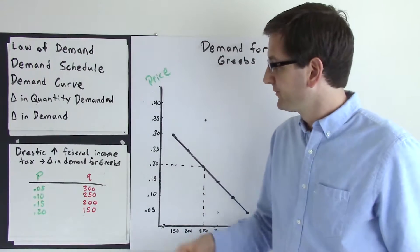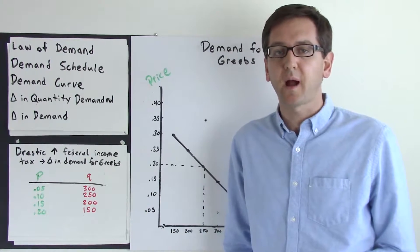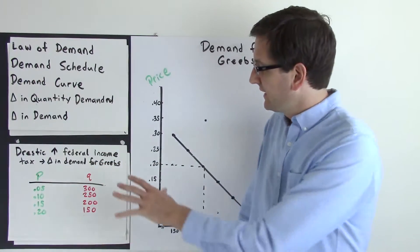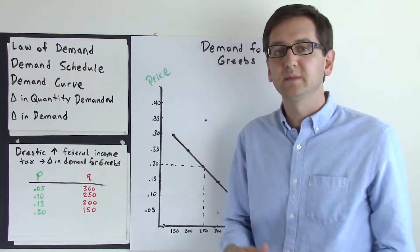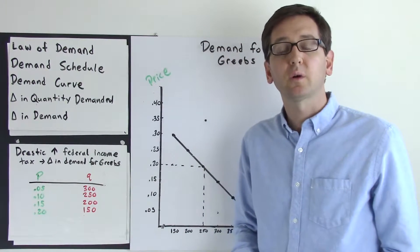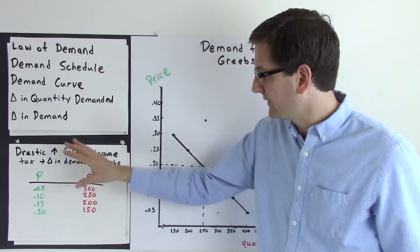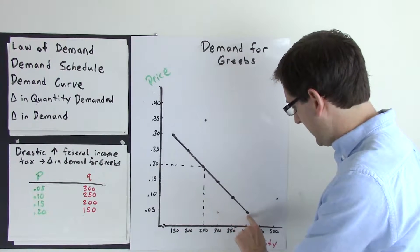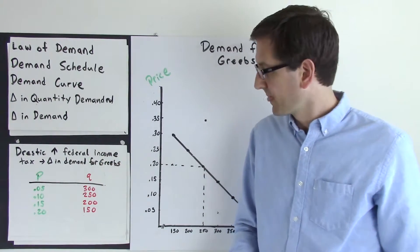Let's take a look at a scenario that will change demand. Let's say there is a drastic increase in federal income tax. That means I'm going to have, and a lot of other people are going to have, fewer dollars in their pockets — less disposable income to purchase products, especially consumer products like Grebes. Here's a new demand schedule given this scenario. Fewer dollars in our pockets means we can't purchase as many Grebes. At 5 cents, the quantity demanded is now 300 million Grebes, whereas before at 5 cents we were demanding 400 million. So a drastic increase in federal income tax has impacted our demand for Grebes.